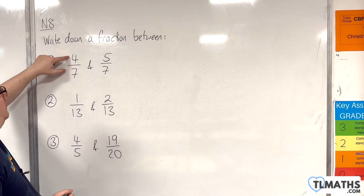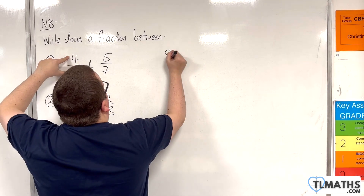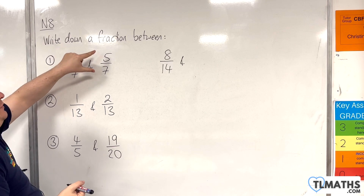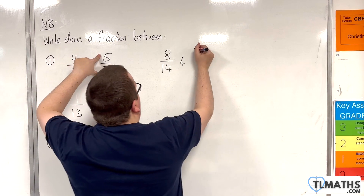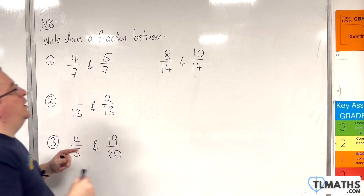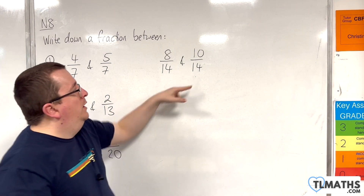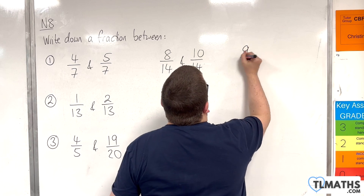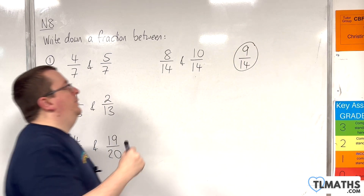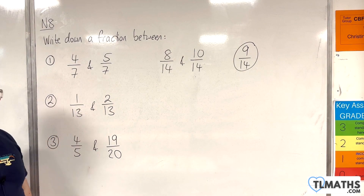So, if I multiply top and bottom of 4 sevenths by 2, I get 8 over 14. And if I do the same for 5 sevenths, I get 10 over 14. So, a fraction that is between these two would be 9 over 14. That is a fraction that is between 4 sevenths and 5 sevenths.